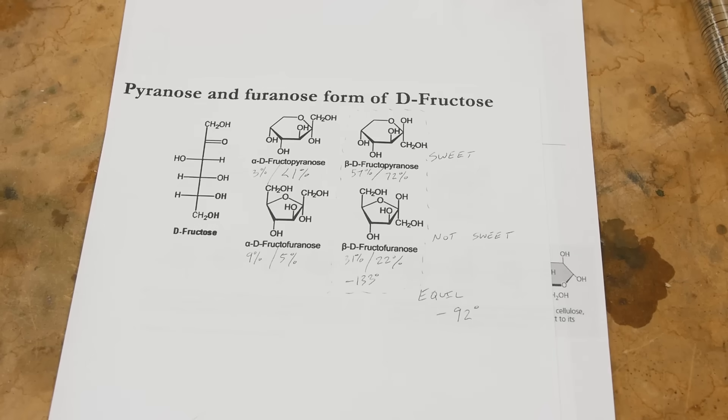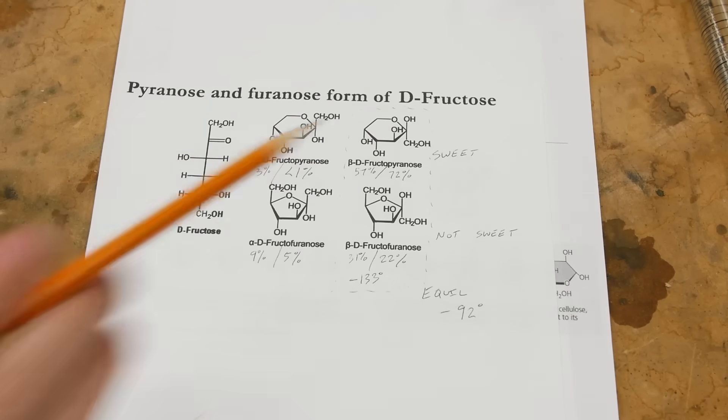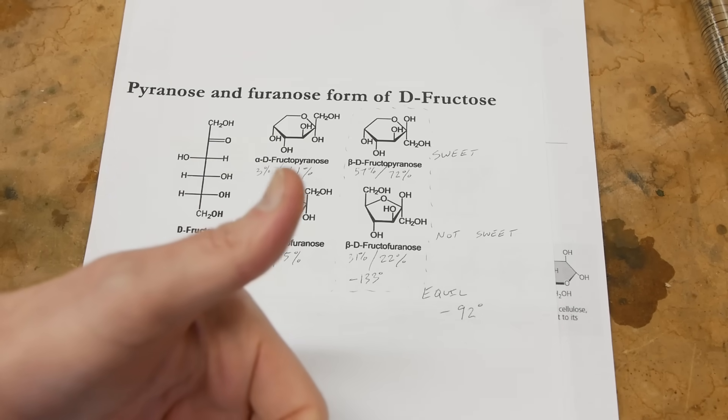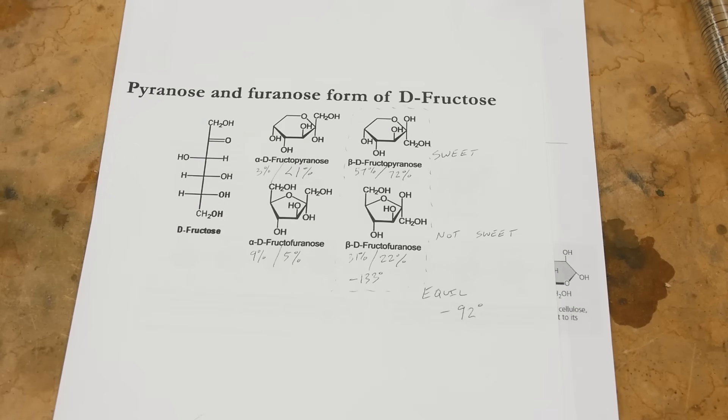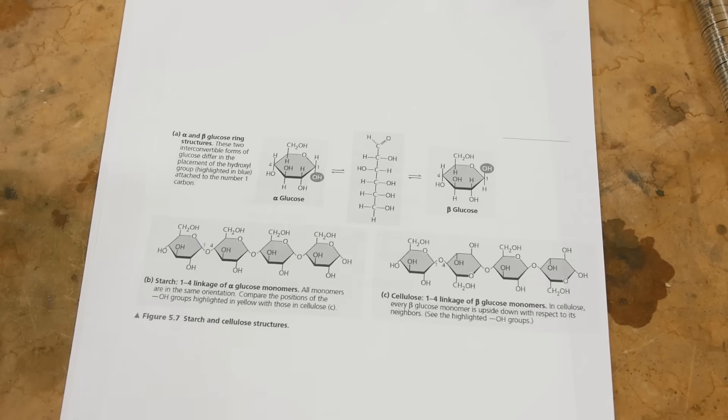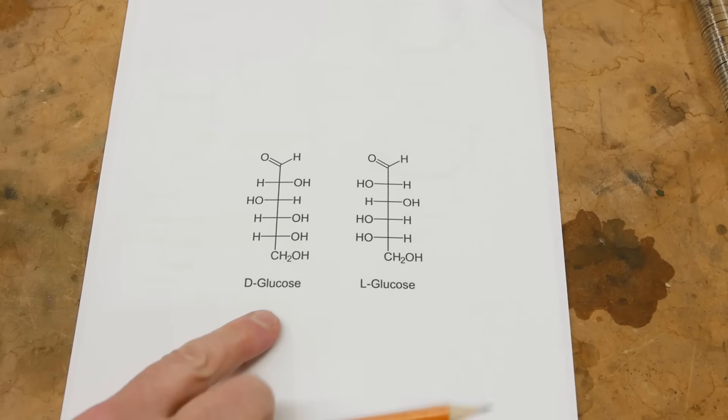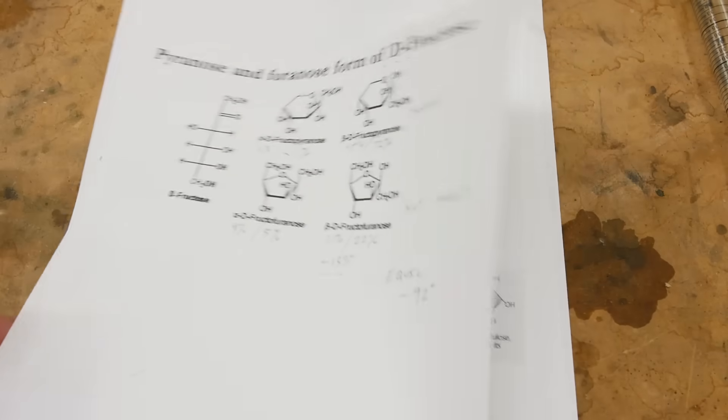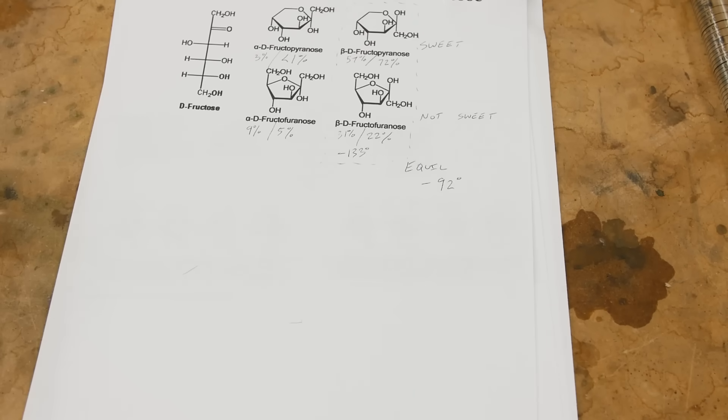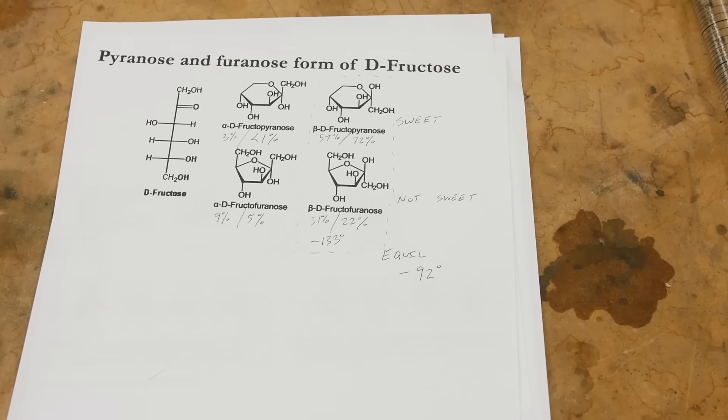One last little bit of complexity before we move on to something else. D fructose actually rotates light to the left. It follows the left-hand rule, whereas D glucose has the right-hand rule. So the D and the L actually do not indicate the direction of the light twisting, which is especially annoying, isn't it?